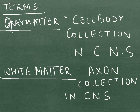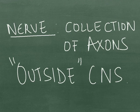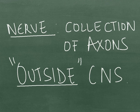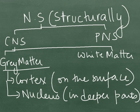Some terms: the grey matter refers to cell body collections in the CNS, whereas the white matter refers to axon collections in the CNS. Some may get confused between nerves and white matter — nerves are collections of axons outside the CNS, whereas white matter is collections of axons inside the CNS. Structurally, the CNS consists of two parts: the grey matter and the white matter.